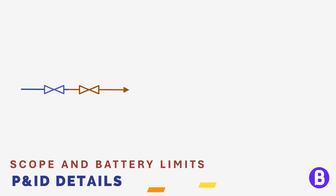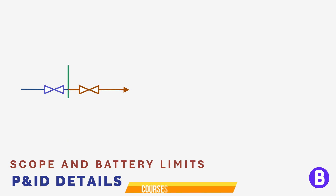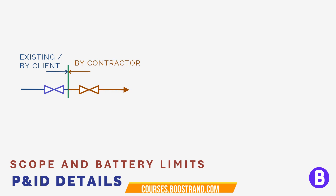P&ID should clearly define the responsibility of each part. If we see this sample pipe with two valves, we want to segregate between what is already existing and what we shall add in our P&ID. We shall draw this line separating both valves — this line shall define the scope of each part. The blue portion shall be the existing system, or what shall be supplied by the client.